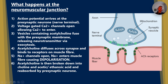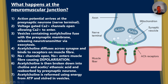After this, acetylcholine is then broken down into choline and acetic acid, a.k.a. ethanoic acid, and reabsorbed by the presynaptic neuron. This will allow it to be used at a later date in another synaptic event. Acetylcholine will be reformed inside the presynaptic neuron using ATP.